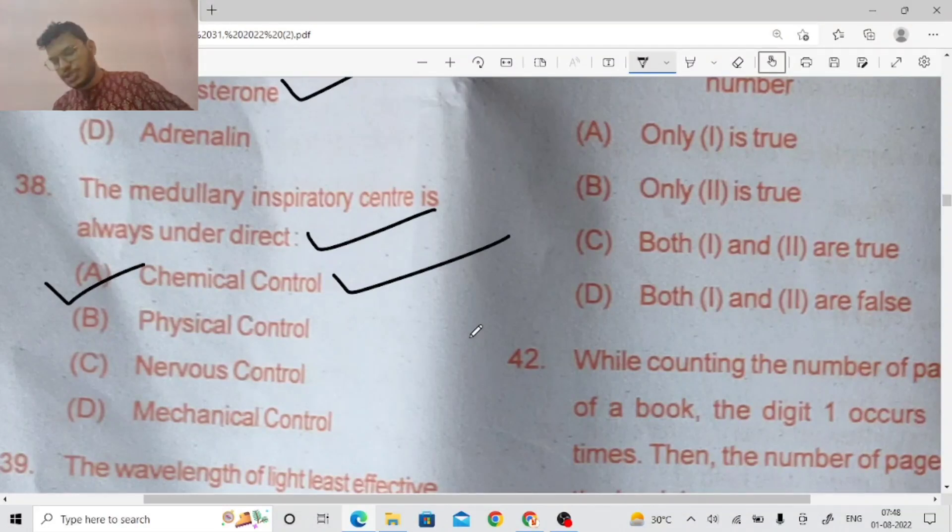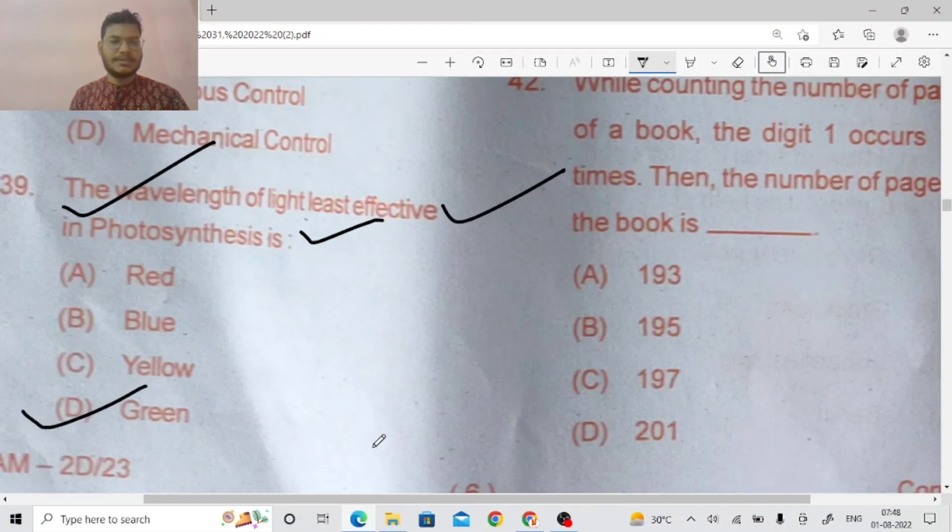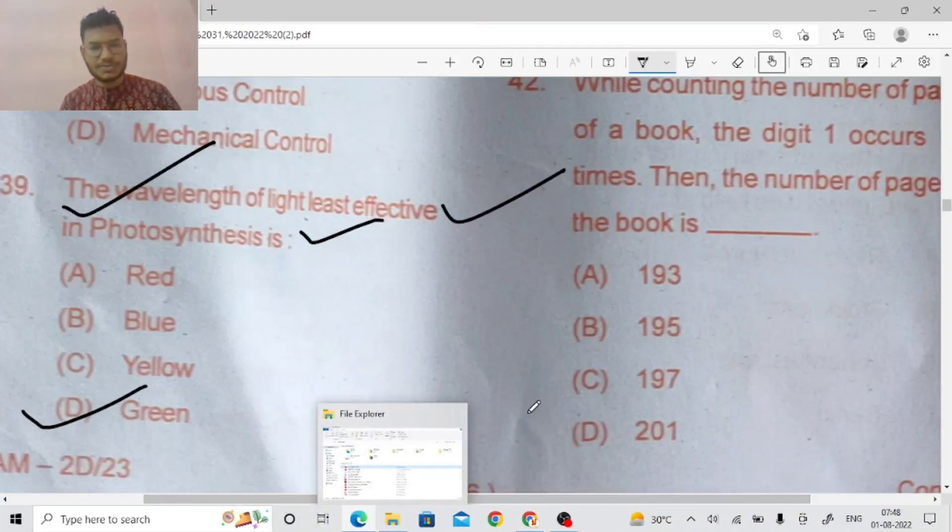The wavelength of light least effective in photosynthesis, green is the right answer.